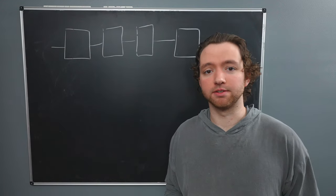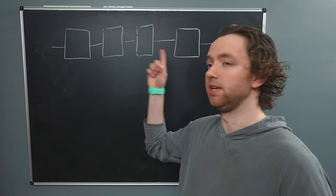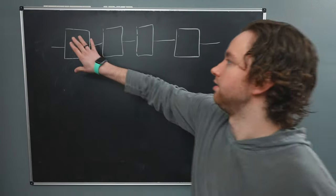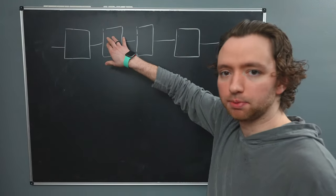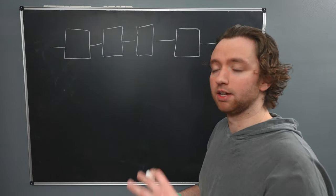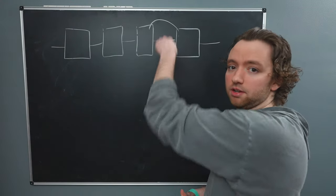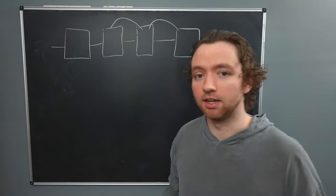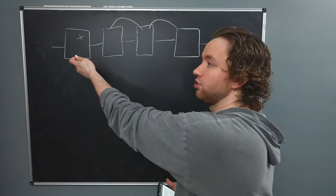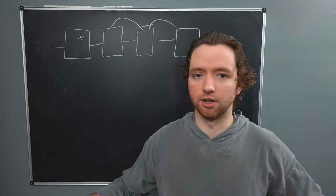So for you computer science nerds out there, this structure is essentially a linked list where each node is a block. Now the way they're connected is a little bit different. Instead of this block pointing to the next block, it kind of works the other way around where this block is going to have the hashed version of the previous block in this block's information.